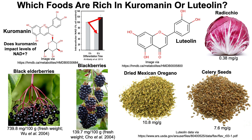Luteolin is found most abundantly in dried Mexican oregano at about 11 milligrams per gram, and in celery seeds at 7.6 milligrams per gram. It's also found in lower amounts in radicchio — 0.38 milligrams per gram — but one can eat more of it to achieve similar amounts. Eating 20 grams of radicchio gets you to 7.6 milligrams, equivalent to one gram of celery seeds, and about an ounce of radicchio matches one gram of dried Mexican oregano.